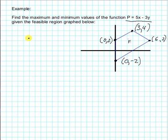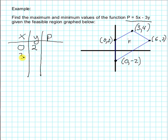The easiest way is to form a table where we input our x, our y values, and we then compute our objective function for each of those. So if we fill in our table, we have 0, 2, then 3, 4, going around the diagram, 6, 2, and 0, -2.